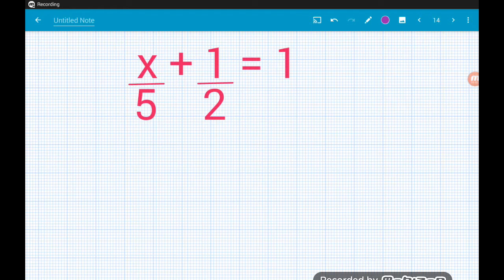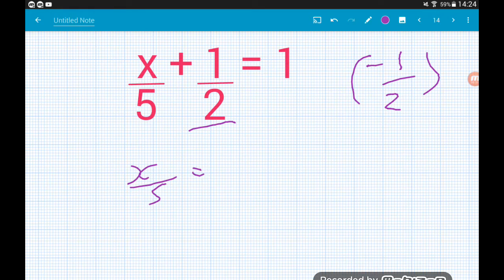Last example for this video then. x over 5 plus 1 half equals 1. Don't be scared by the fact we've got a fraction here. Treat it exactly the same way. We're going to subtract the 1 half. That leaves us with x over 5. On the right, 1 minus 1 half equals 1 half. Then we've got x divided by 5 equals a half. So to move the 5, we multiply by it. That gives us x equals, now if we do 5 times 1 half, think of that as having 5 halves of a pizza. We've got 5 halves. If you wanted to turn that into a decimal, it would be 2.5. But there's absolutely nothing wrong with fractions whatsoever.